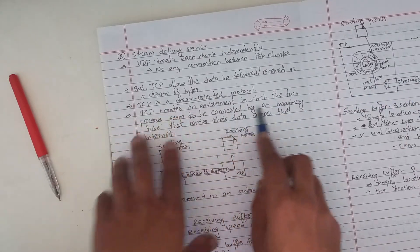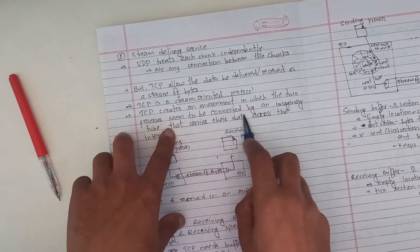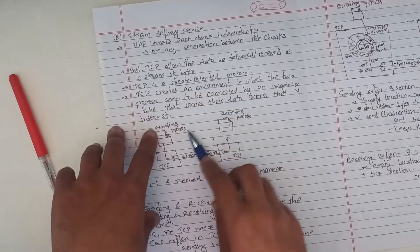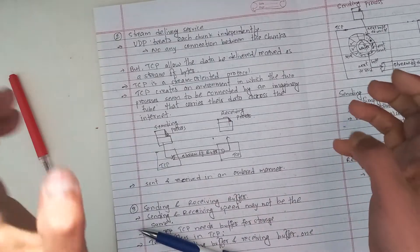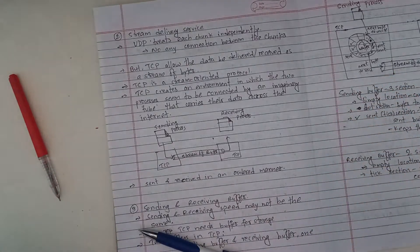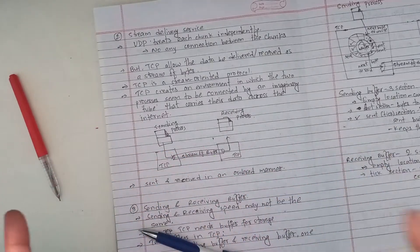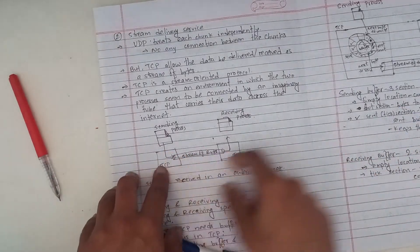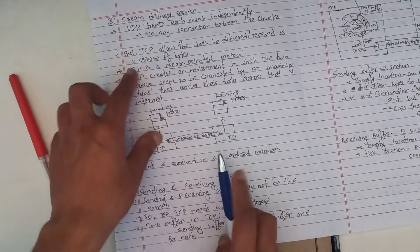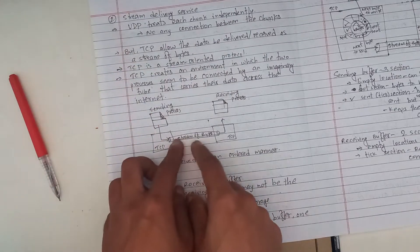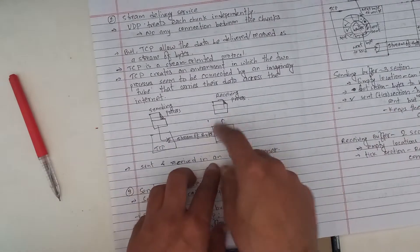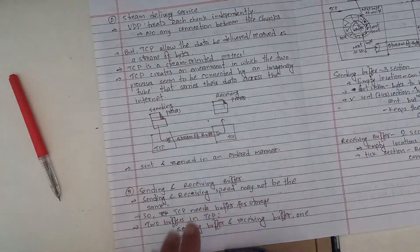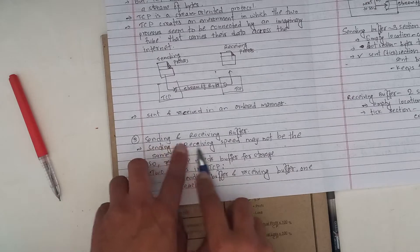TCP creates an environment in which the two processes seem to be connected by an imaginary tube that carries their data across the internet. This is a stream-oriented, connection-oriented approach. The two processes have a virtual imaginary tube connection, and the stream of bytes are transferred, sent, and received in an ordered manner.